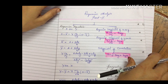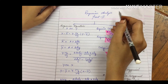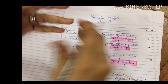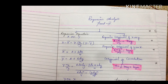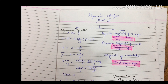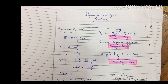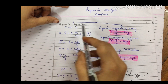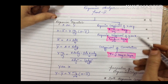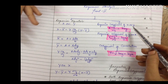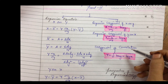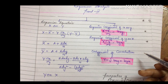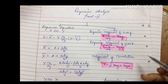Hello everyone, today I came up with the third part of regression analysis. In my first and second part I have explained what is a regression equation and how we are going to solve problems related to regression equation. In today's part we are going to learn how to solve a problem related to coefficient of correlation.